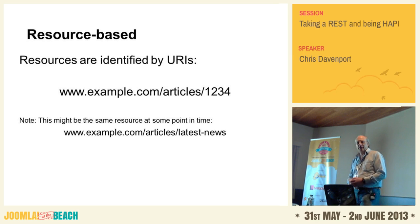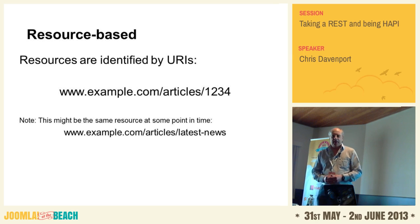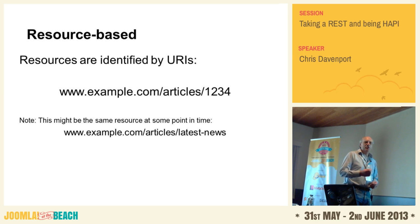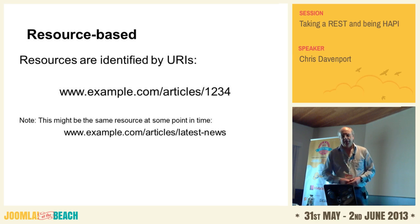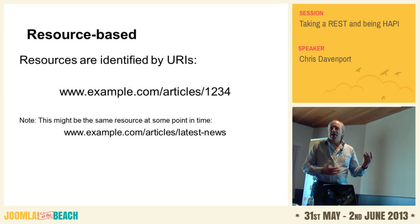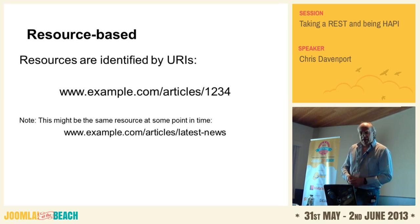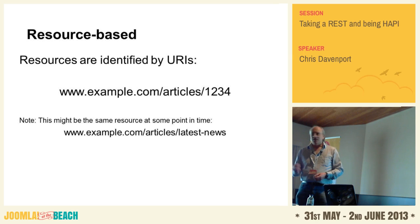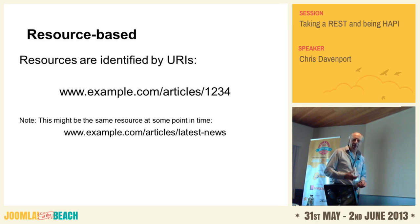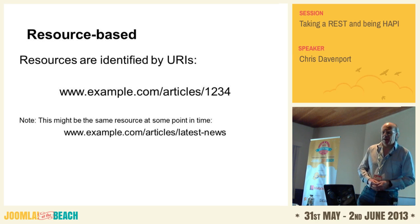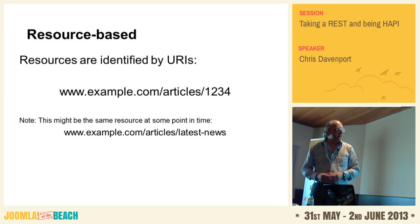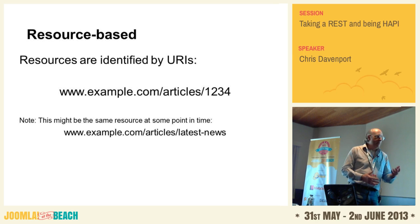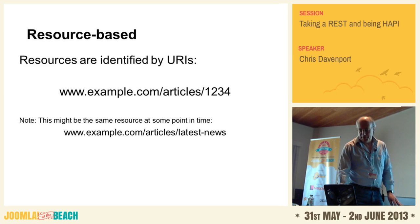Another key constraint is that the system is based on resources. An article on a Joomla site, for example, is a resource — and for those into domain-driven development, that's basically your domain objects. Those resources are identified by URIs — Uniform Resource Identifier. It's important to realize that a resource can have multiple URIs; that's perfectly acceptable. And URIs may depend on time as well.